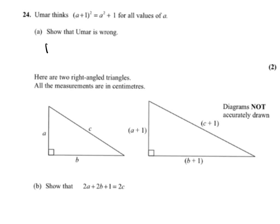So let's take a equals 2, for example. So if a equals 2, then (2+1)² will not equal 2² + 1.